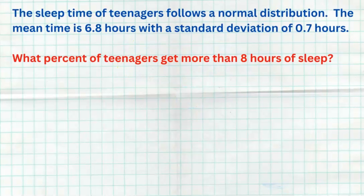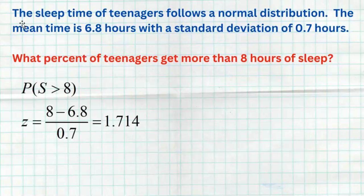This first example says the sleep time of teenagers follows a normal distribution with a mean of 6.8 hours and a standard deviation of 0.7 hours. The first question asks: what percent of teenagers get more than 8 hours of sleep? So on that normal distribution we want to look above 8. We're finding the probability that sleep time is greater than 8 hours. The first step is to get the Z-score for 8: that's the value of interest, minus the mean, divided by the standard deviation. On the standard normal model, 8 would be 1.714 standard deviations above the mean.